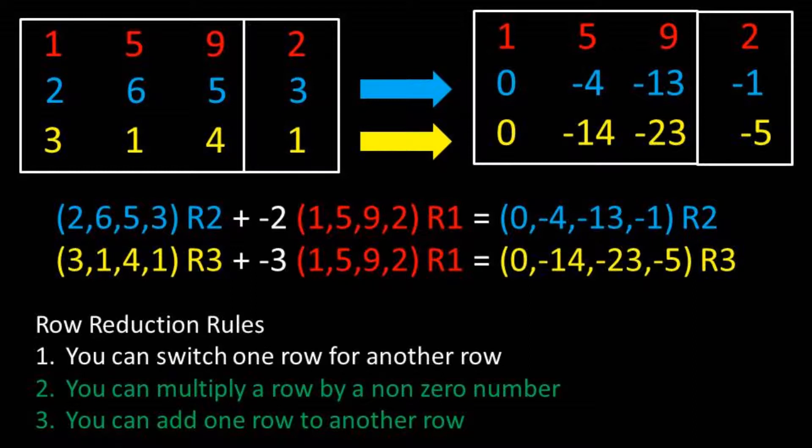We will then do something similar to row 3 by adding a negative 3 times row 1. So now we have all zeros in column 1 below the 1 in row 1.